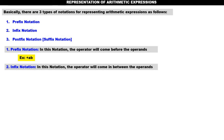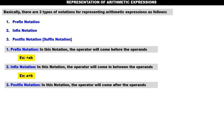Number two is infix notation. In this notation, the operator will come in between the operands. That is 'a + b'. The operator plus comes between the operands a and b. The third one is postfix notation. In this notation, the operator will come after the operands. That is 'ab+'. The operator plus comes after the operands a and b.